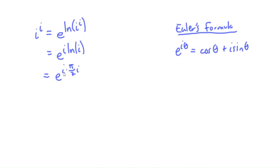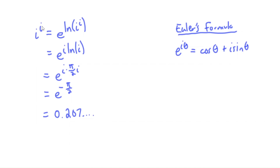So if that's true, notice at this point we have an i times an i — that would be i squared, which is negative 1. We can write this as e to the negative pi over 2. And e to the negative pi over 2, if you type this into the calculator, gives you the decimal 0.207 and on and on. So i to the power of i is e to the negative pi over 2, which is that crazy decimal we looked at.